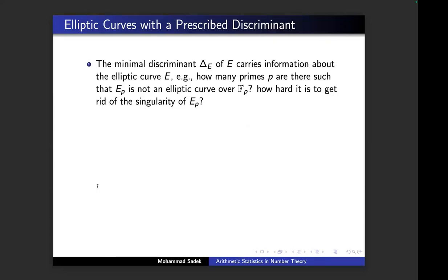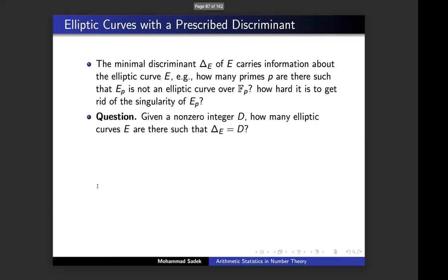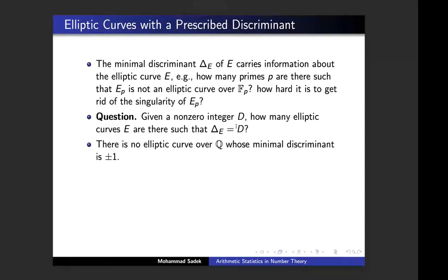That's another explicit question: find all elliptic curves whose discriminant equals a specific integer. A few answers: we are sure there are no elliptic curves with discriminant ±1. If you think about it, this means no prime divides the discriminant, so all reductions are good — all spots are green, there are no red spots. Shafarevich, in one of his famous theorems, proved that up to isomorphism over ℚ, there are only finitely many elliptic curves with a given discriminant.